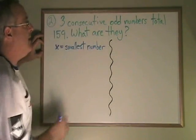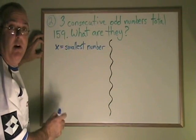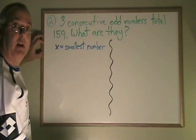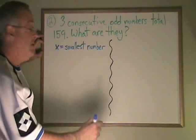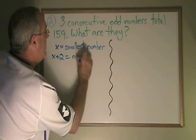The next consecutive odd number would be arrived at by adding 2 to the smallest number. Remember, we're doing consecutive odd numbers, not just consecutive numbers. Odd numbers go up by 2s. So, x plus 2 equals the next number.